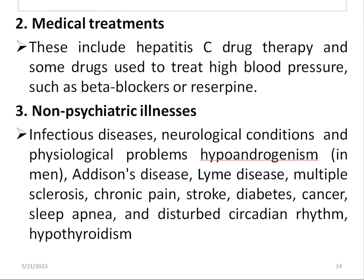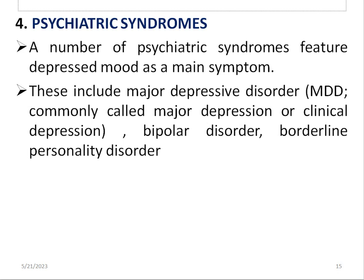Other predispositions to depression include non-psychiatric illnesses: infectious diseases, neurotic conditions, and physiological problems like hypoandrogenism in men. Chronic conditions like stroke, diabetes, and cancer may also predispose one to depression. Regarding psychiatric syndromes, a number of conditions feature depressed mood as a main symptom, including major depressive disorder, commonly called major or clinical depression, as well as bipolar disorder and personality disorders.